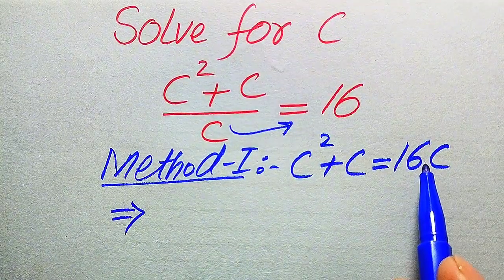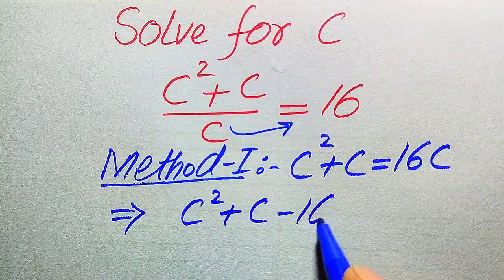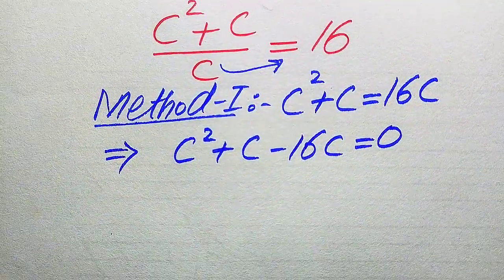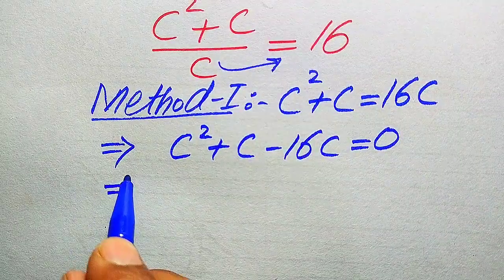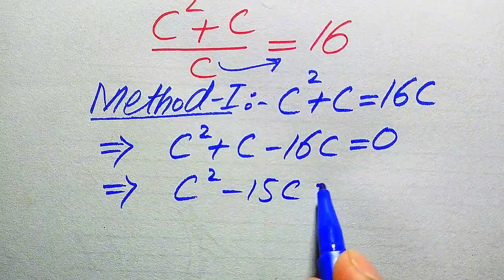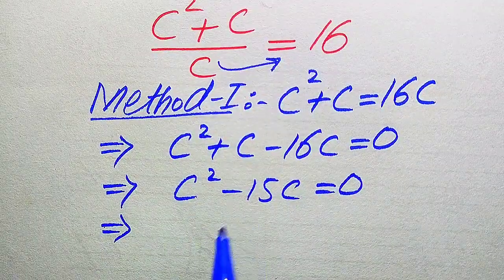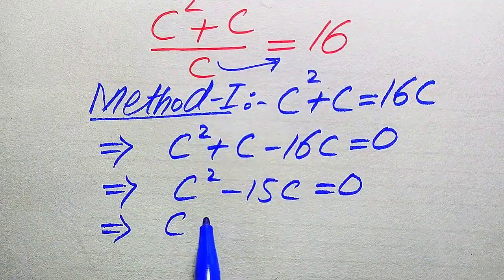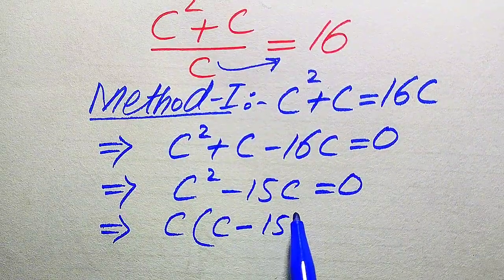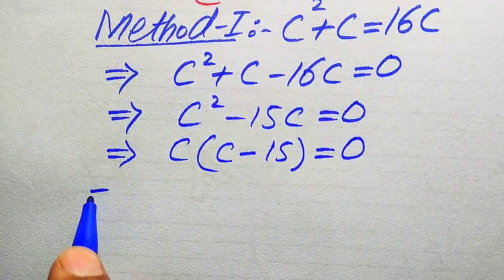In the next step, we move 16c to the left-hand side, giving us c² + c − 16c = 0, which simplifies to c² − 15c = 0. Both terms involve c, so we factor out c to get c(c − 15) = 0.